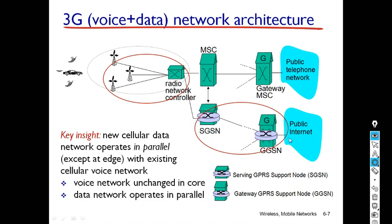Along with the separate cellular voice network — the operator's cellular voice network — in 3G the data network core network has been modified and incorporated in parallel along with the existing cellular voice network. That is the main advantage of 3G.